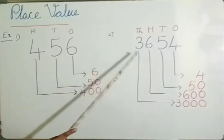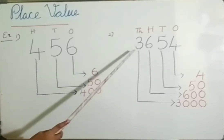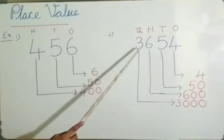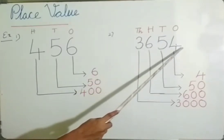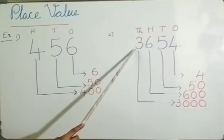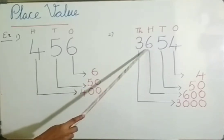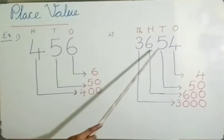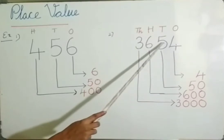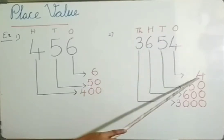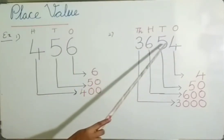Here is a second example with a 4-digit number. We can find place value using another method — by reading the number as we say it. The number is 3,654. We read 3 as 3000, so its place value is 3000. We read 6 as 600, so the place value of 6 is 600. We read 5 as 50, so the place value of 5 is 50. We read 4 as 4, so the place value of 4 is 4.